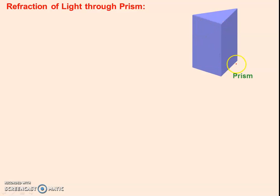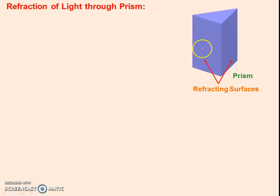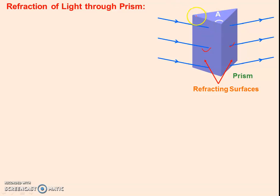Now see at the screen. There is a three-dimensional figure, and these two rectangular surfaces are refracting surfaces — meaning the ray will refract through this surface and this surface. The third surface is called the base; the surface in the inward direction is the base. The invisible surface in this diagram is the base, and the angle opposite to the base is called the Prism angle. This is the Prism angle and we are taking this Prism angle as A.